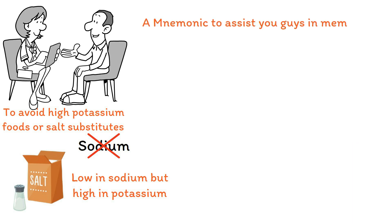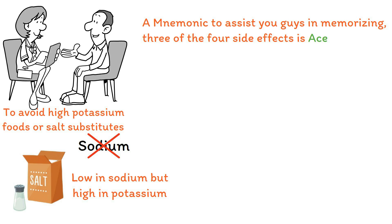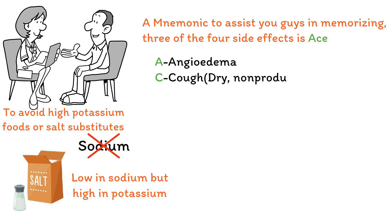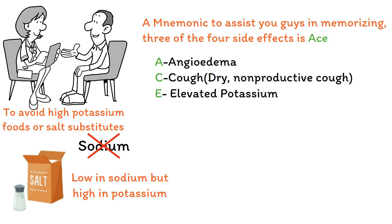A mnemonic to help memorize three of the four side effects is ACE — fitting since we're talking about ACE inhibitors. A is for angioedema, C is for cough (remember it's a dry non-productive cough), and E is for elevated potassium. A — angioedema, C — dry cough, E — elevated potassium.